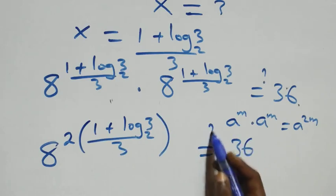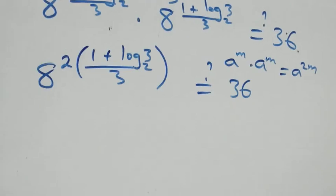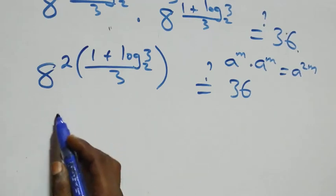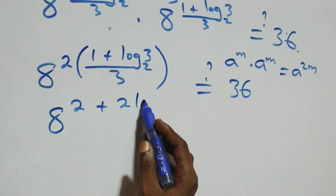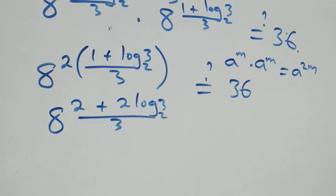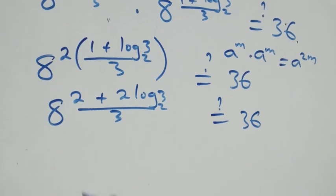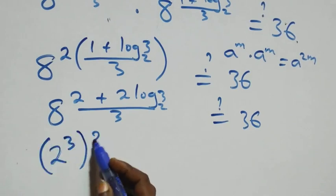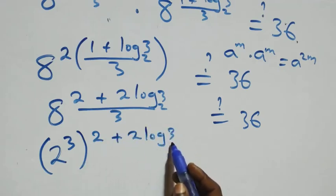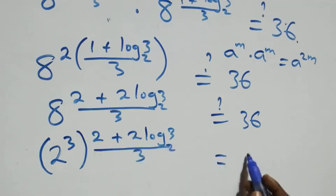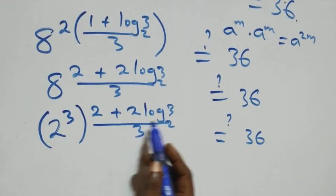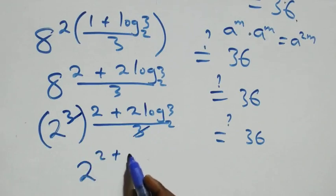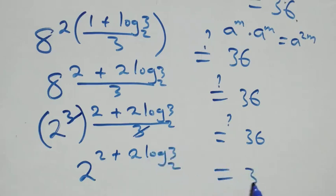Multiplying out the brackets gives 8 raised to power (2 plus 2 log 3) over 3. Expressing 8 as 2 raised to power 3 and applying the power rule, the 3 in the exponent and the 3 in the denominator cancel, leaving 2 raised to power (2 plus 2 log 3). Is this equal to 36?